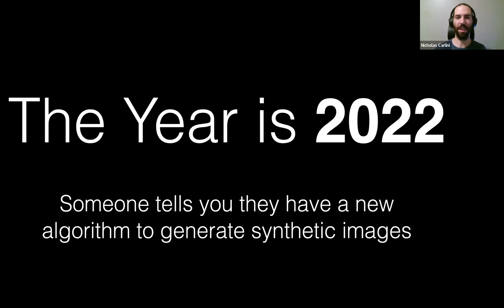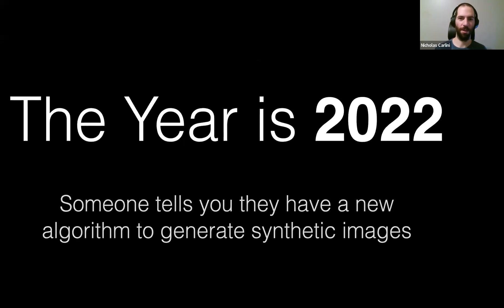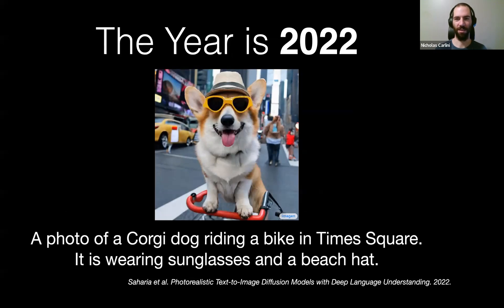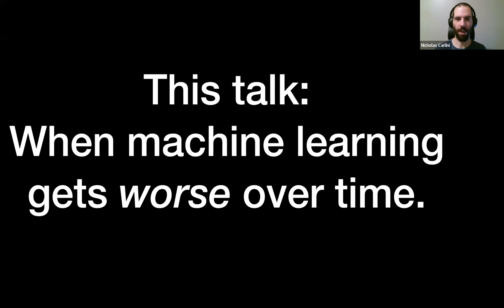On the other hand, if someone tells you the same thing today, they might show you an image like this — an output of a neural network, a state-of-the-art machine learning model, where someone told it they want a photo of a corgi in Times Square wearing sunglasses and a beach hat, and the model came up with this very impressive image depicting exactly what was asked for. It's surprising that over just a few years these models have gotten quite so good.